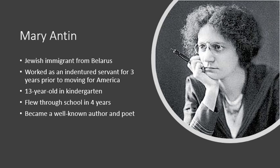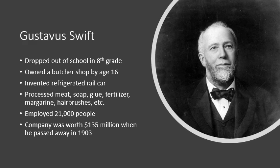The Industrial Revolution also allowed people to get very rich, as with Gustavus Swift. Swift dropped out of school in eighth grade, opened a butcher shop by age 16, and invented a refrigerated rail car which made his business grow. His company specialized in processed meat, soap, glue, fertilizer, margarine, and hairbrushes. He employed 21,000 people, and his company was worth $135 million when he passed away in 1903.